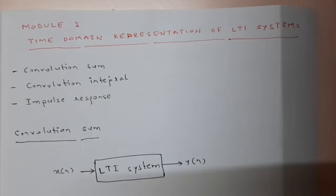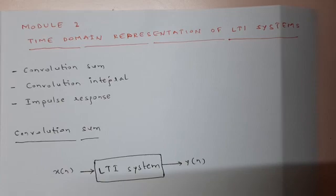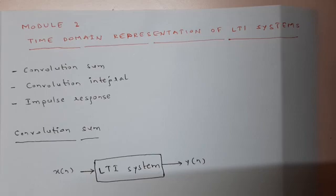Good evening students. In module 2, we learned properties of systems. In continuation with properties of systems, we now learn time domain representation of LTI systems. LTI systems here means linear time invariant systems. A LTI system's input and output can be related through convolution sum, convolution integral, or the impulse response of an LTI system. First, we will learn convolution sum.